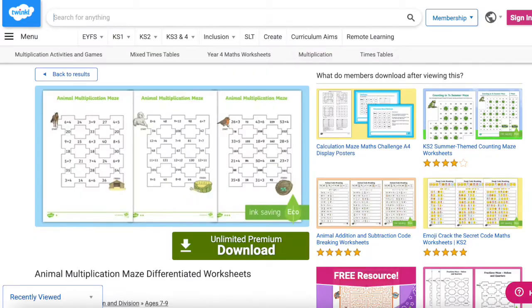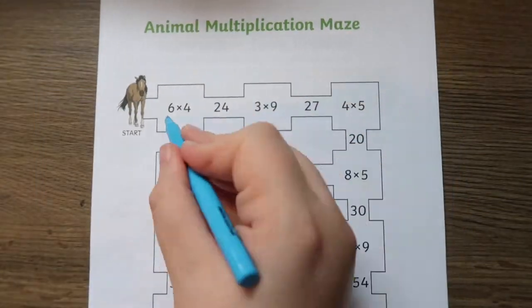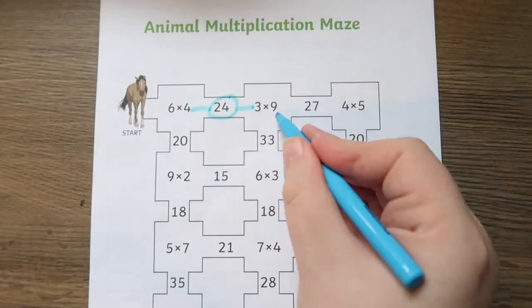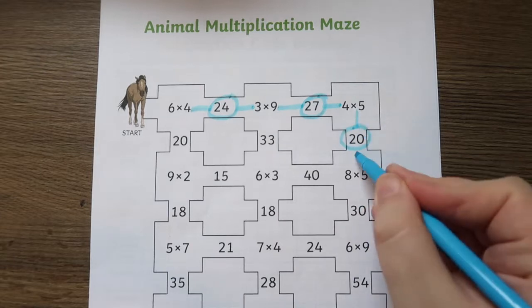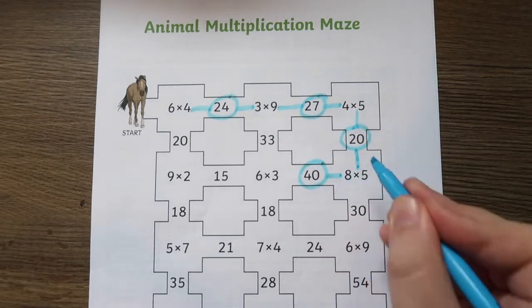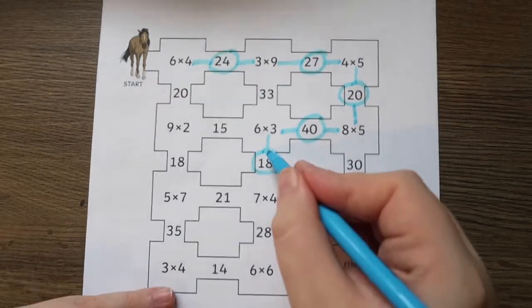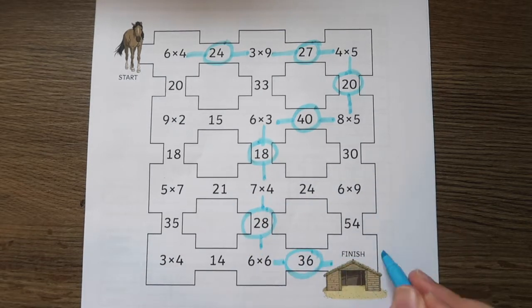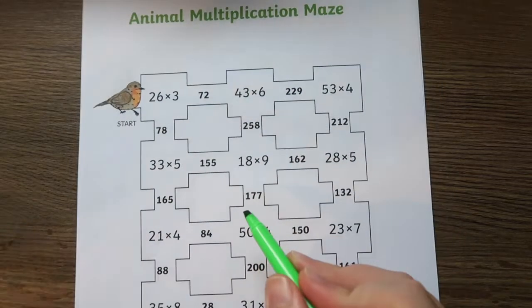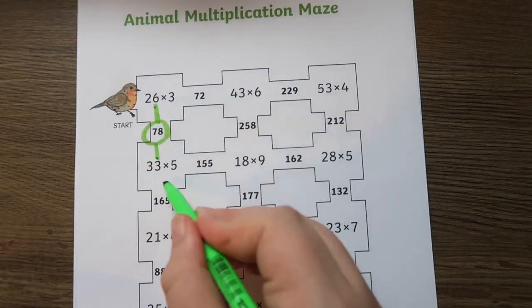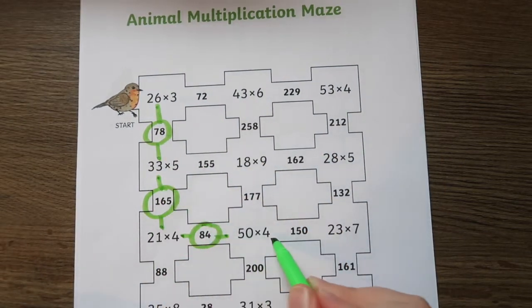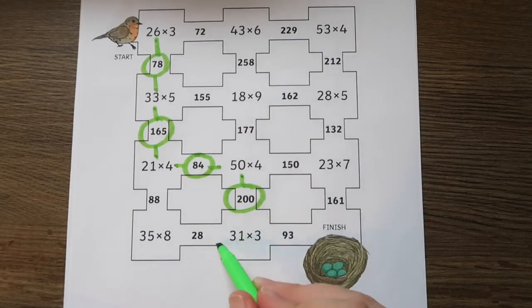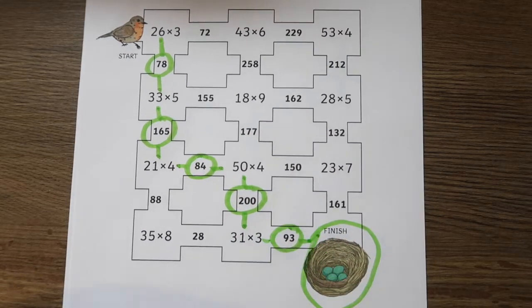The Animal Multiplication Maze Differentiated Worksheets are a fun resource that use a variety of different activities to ensure children are able to apply their mathematical skills in different scenarios. This fun animal themed activity is perfect for consolidating mental and written multiplication knowledge and great practice in preparation for the year 4 times table test. This resource would be great as an extension task or even to take home for home learning.